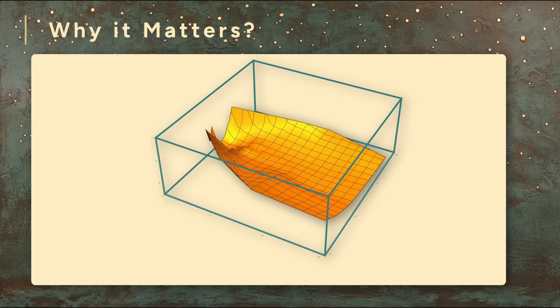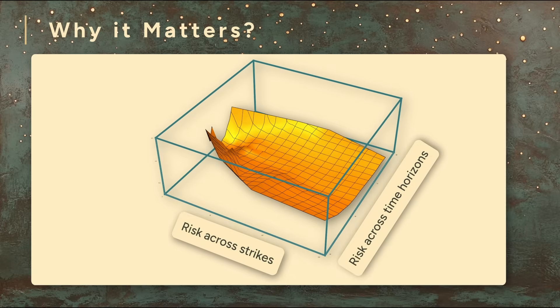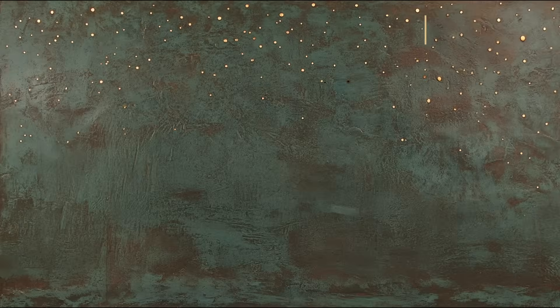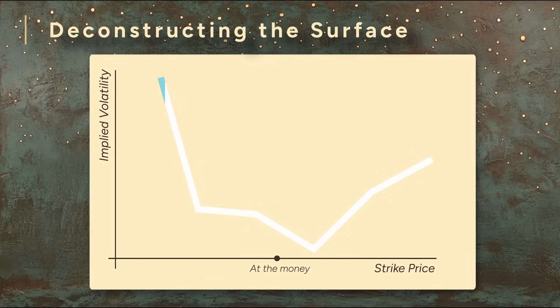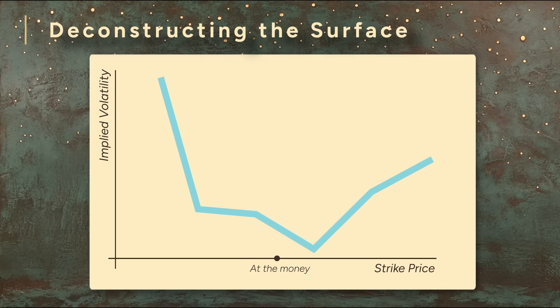So the volatility surface shows us two things at once: how the market prices risk at different strikes and how it prices risk over different time horizons. Let's return to the most striking feature of the volatility surface, the smile. The key idea is that implied volatility isn't uniform across all strike prices. Instead of a flat line, we see a curve, a smile,